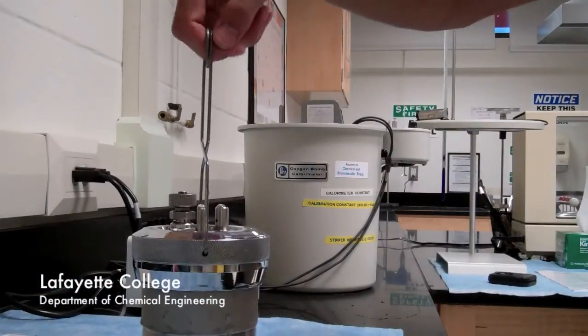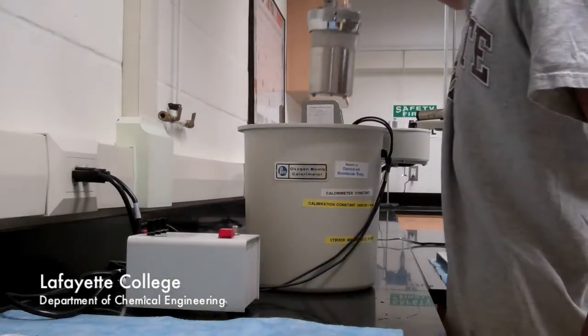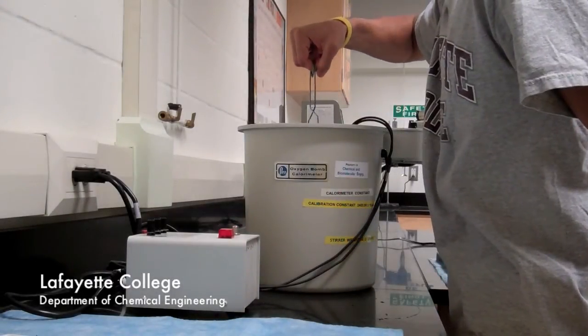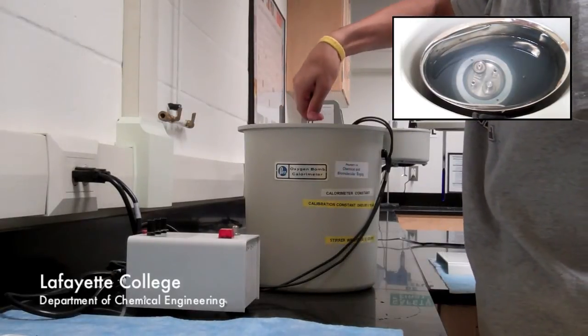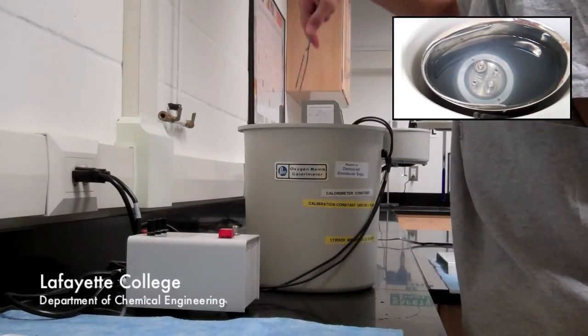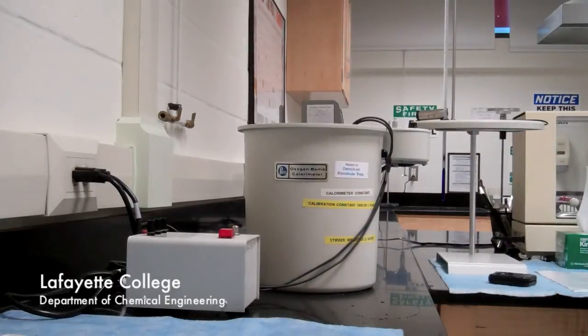Remove the oxygen hose connector and attach the clamps to the bomb. Transfer the bomb to the calorimeter by placing your finger in the top of the clamps. Do not squeeze the clamps together or the bomb will fall. Once the bomb is submerged in the water, remove the clamps by squeezing them together and shake any water on the clamps back into the bucket.